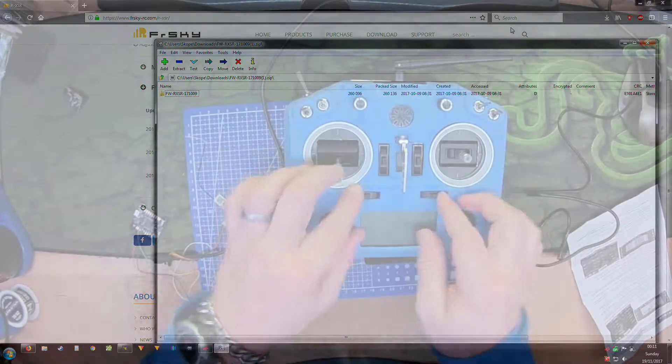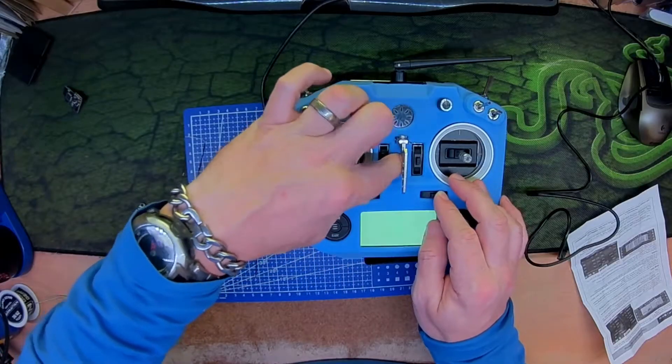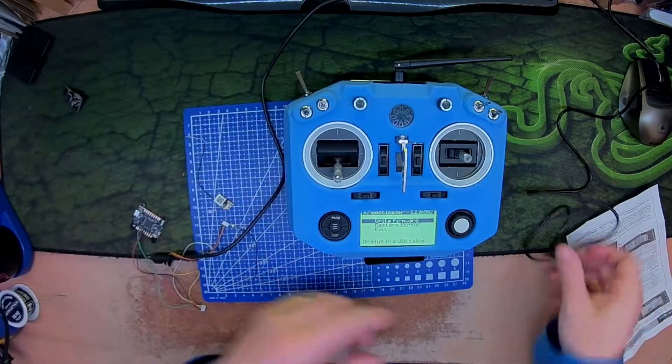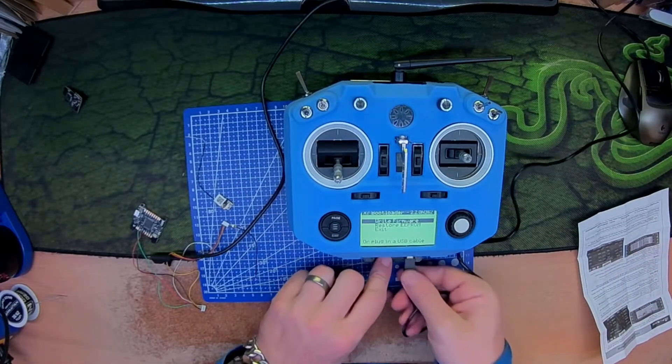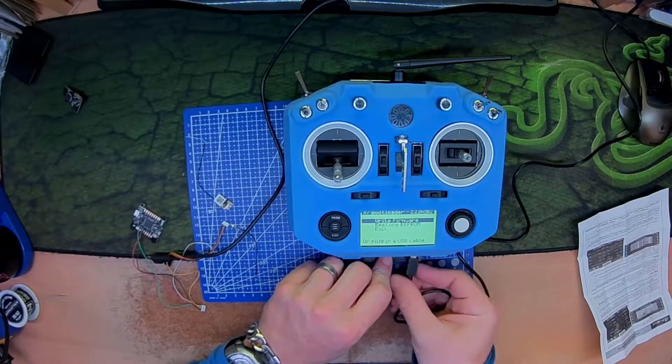Easiest way to get the firmware on here: hold the sticks together, quick press on there, and now it's registered as a mass USB device.